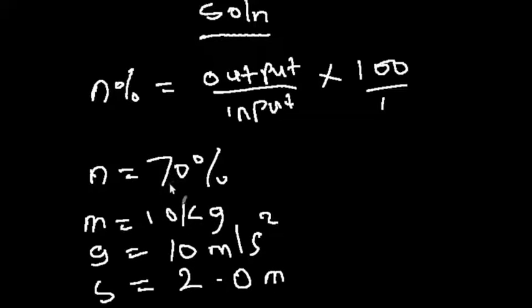So we are given our efficiency at 70 percent, our mass 10 kg, our acceleration due to gravity g at 10 meters per second squared, and our height, which is the distance, to be 2.0 meters.